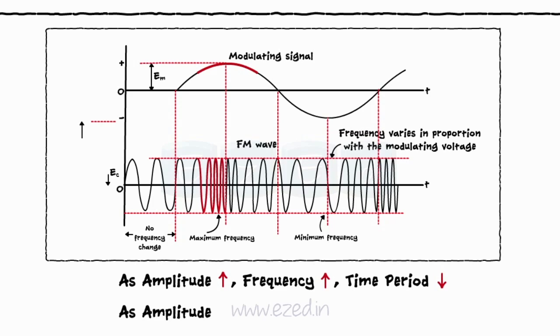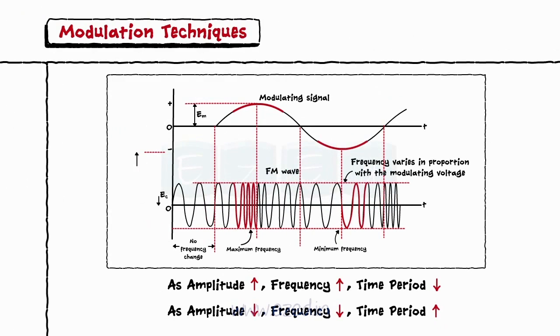And as the amplitude of a modulating signal decreases, the frequency of a carrier signal also decreases. Hence, its time period increases, and the carrier signal expands.